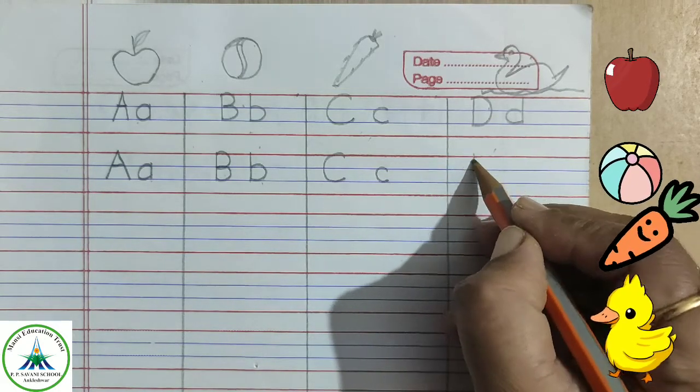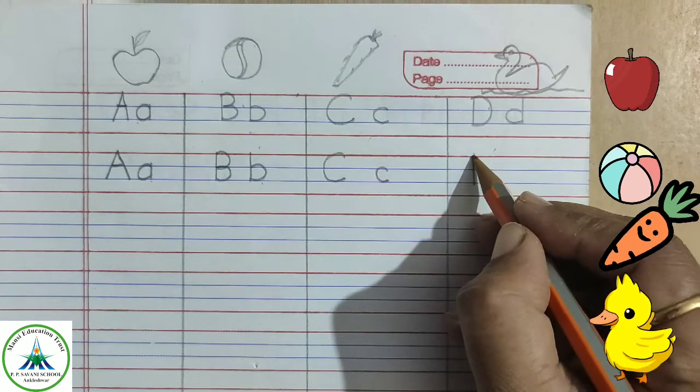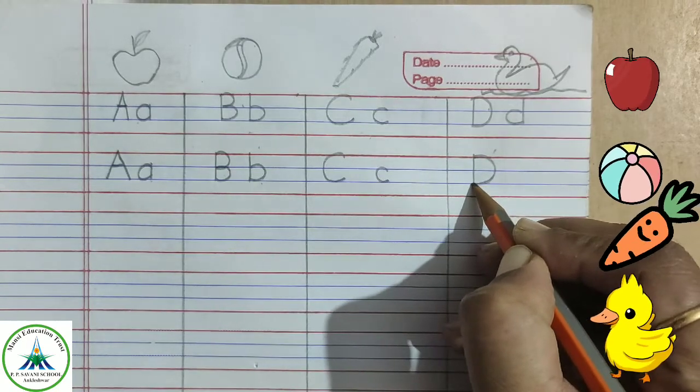To write capital letter D, make a standing line in three lines, start from red line and then start a curve from red line to second blue line.